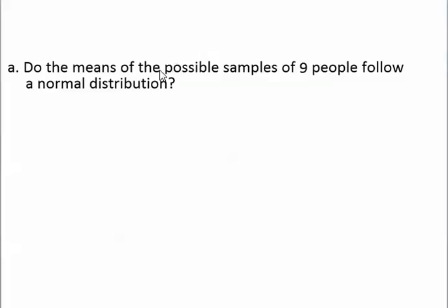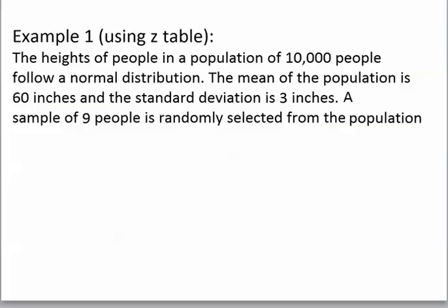Before we can use z-scores to find probabilities, we have to find out if the sampling distribution is normal. Let's look back at the question to see if we can find out if the sampling distribution is normal.